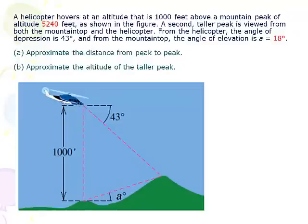And so now I'm going to have a couple problems here that normally give people headaches on the homework. This is one of them. A helicopter hovers an altitude 1,000 feet above the mountain peak at an altitude of 5,240 feet, as shown in the figure. A second taller peak is viewed from both the mountaintop and the helicopter.